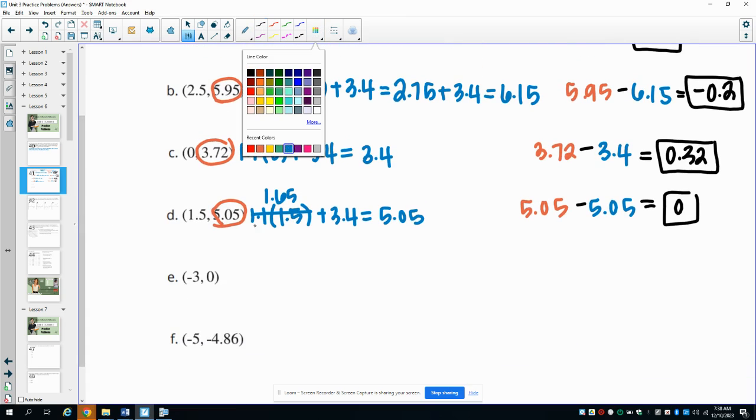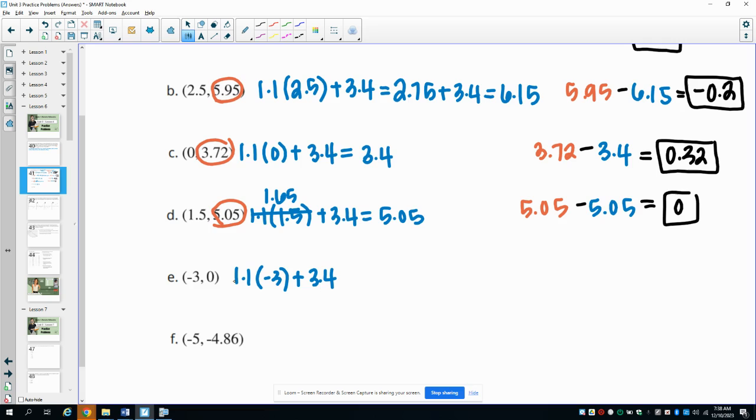Part E, 1.1 times negative 3 plus 3.4. So 1.1 times negative 3 is negative 3.3 plus 3.4 gives us 0.1. Our actual value was 0 minus our estimate of 0.1 gives us a residual of negative 0.1.